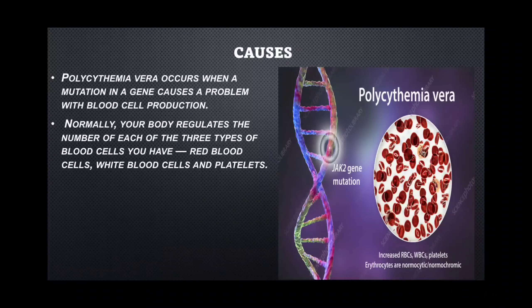Normally, our body regulates the number of each of the three types of blood cells — red blood cells, white blood cells, and platelets — by destroying and producing them at the same rate. As much as the bone marrow produces blood cells, other organs destroy the excess blood cells. But in this condition, they produce an enormous amount of blood cells such that the destruction does not happen on time.